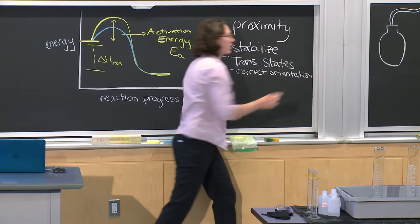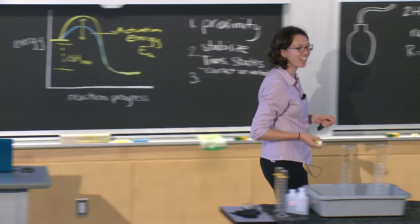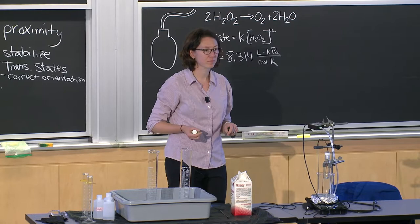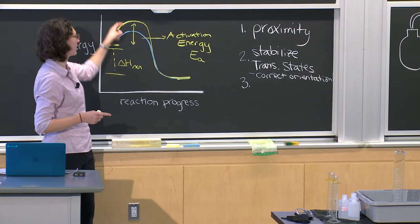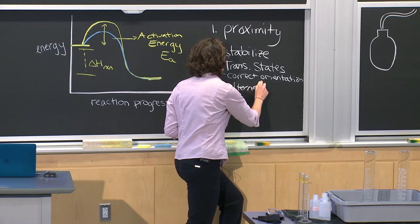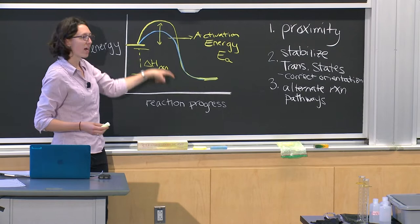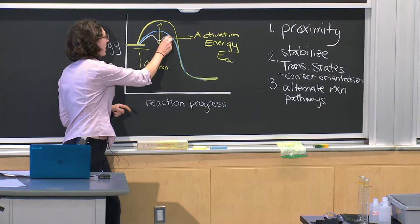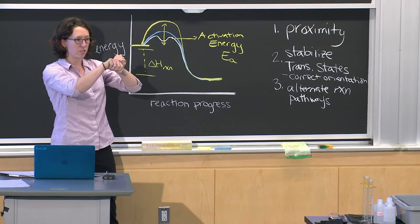Another method enzymes use to lower activation energy is providing alternate reaction pathways. Sometimes what looks like a one-step reaction can, with an enzyme, include an intermediate that helps lower the overall energy. So the enzyme can provide an alternate mechanism — perhaps a third intermediate — that actually lowers the overall activation energy rather than just two molecules reacting directly together.